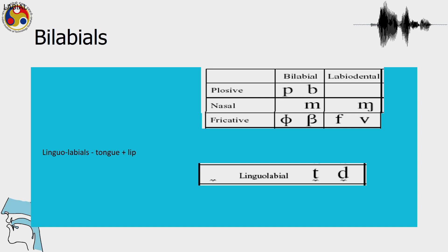The bilabial plosives that we have talked about for English, which are very common in languages — these are the bilabial plosives. Then there is a bilabial nasal and then the labiodental nasal, followed by the fricatives, and then bilabial fricatives and labiodental fricatives.